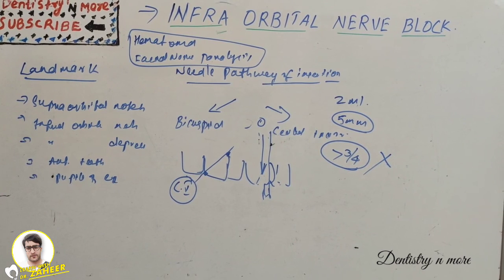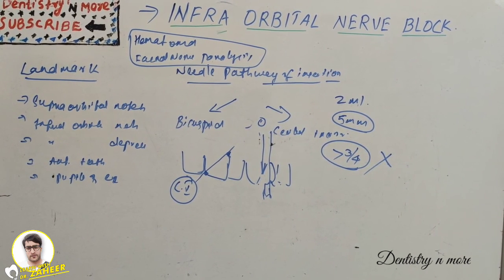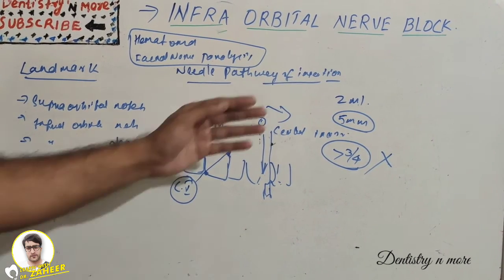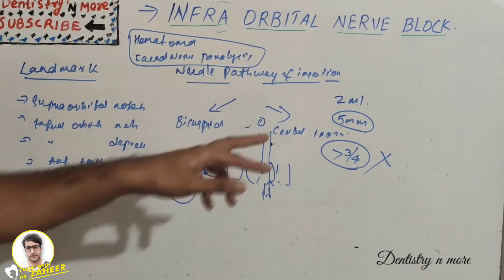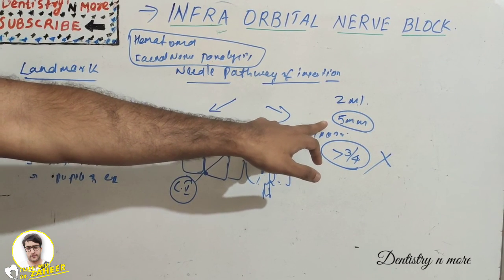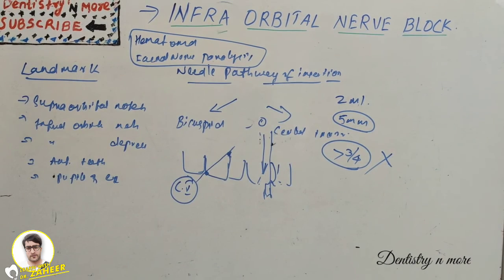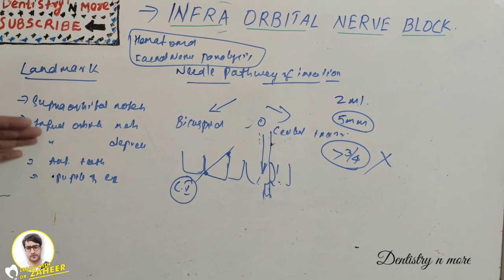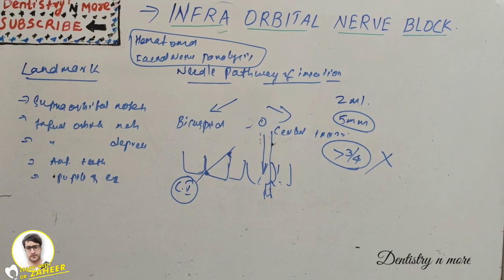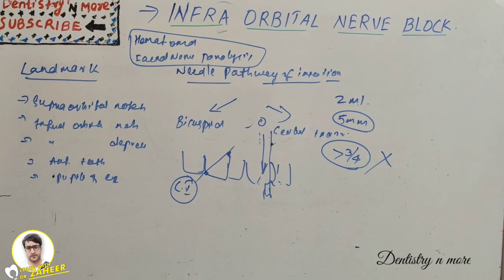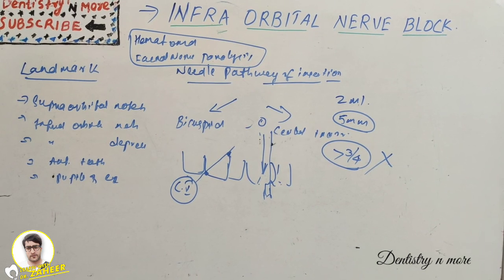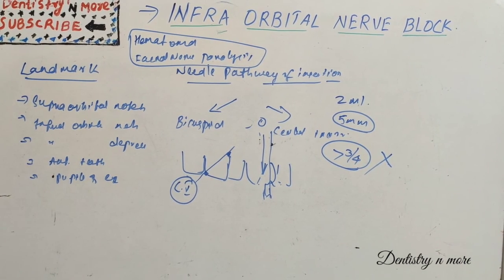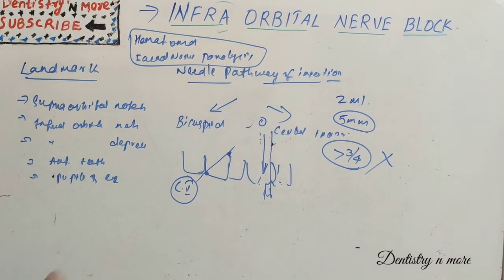This is a very commonly asked essay question in oral surgery papers. You need to write about indications, contraindications, side effects, the two methods of pathway of insertion (central incisor and bicuspid approach), the amount of solution injected, and the needle length — which should not exceed three-fourths of its length. Include the landmarks: supraorbital notch, infraorbital notch, infraorbital depression, anterior teeth, and pupils of the eye. Also explain the infraorbital foramen and its branches — anterior and middle superior alveolar nerves — with pictures, and describe the area and nerves anesthetized.